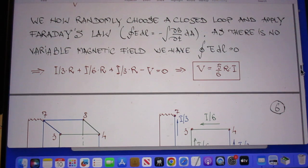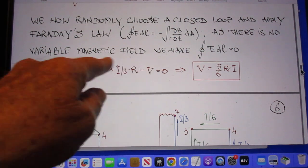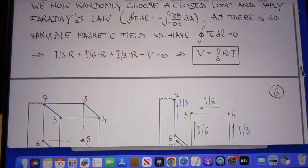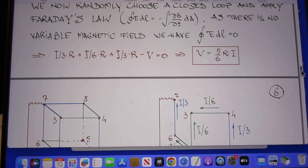And so this is now Faraday's law and out comes that V equals 5/6 R times I. In other words, the replacement resistor is 5/6 of R.